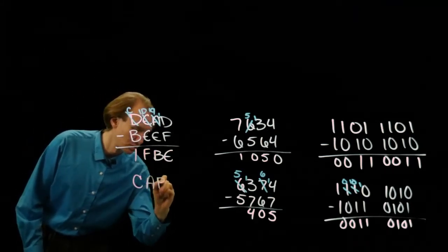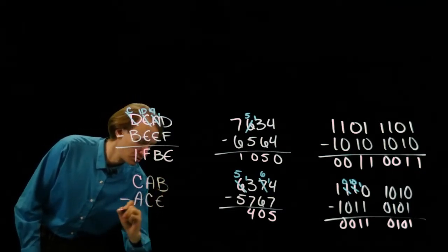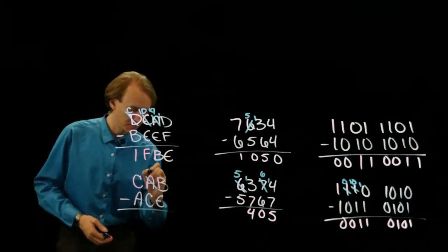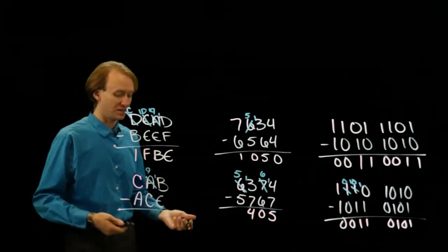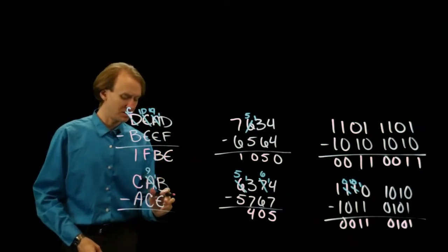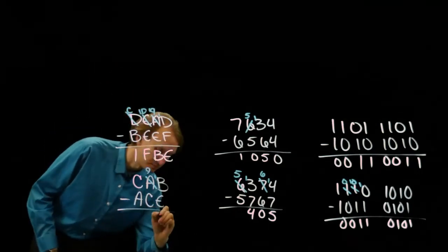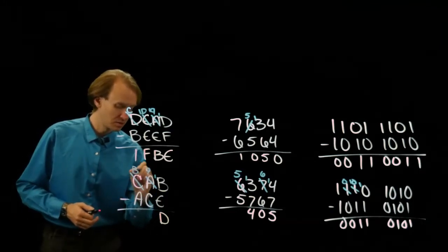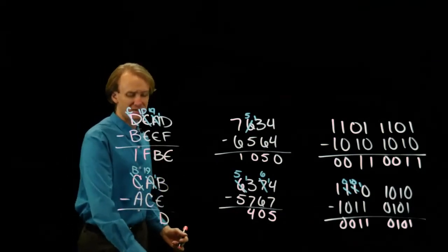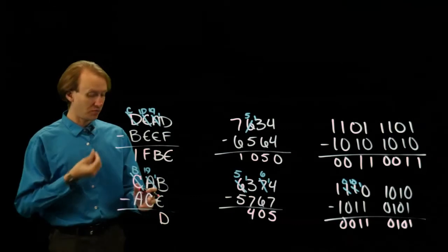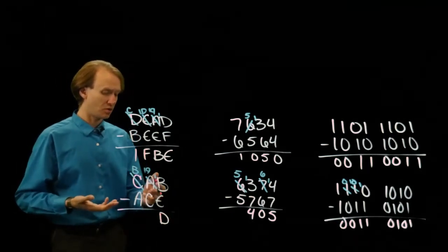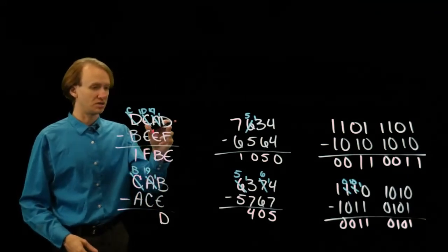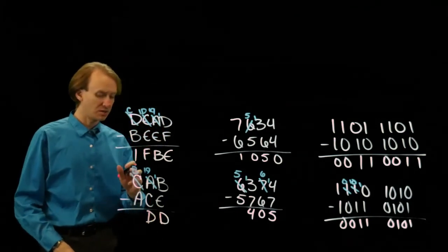If I do C minus A in hex: E is less than B, so I will need to borrow something from this A. A minus 1 is 9. So now I have 1B minus E. 10 minus E leaves me with 2. If I add that 2 to the B, then I'll get a D. Then 9 is less than C, so I'll need to borrow something — C becomes a B. Now I have a 19. 19 minus C: if I add 4 to C I get 10, so 10 minus C leaves me with 4. 4 plus 9 gets me to 13, which would be D. And then B minus A is 1.